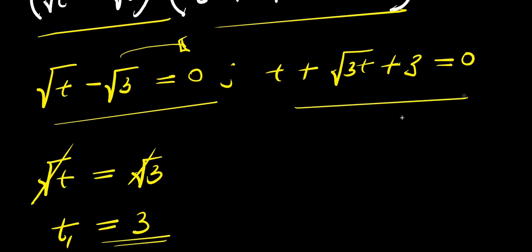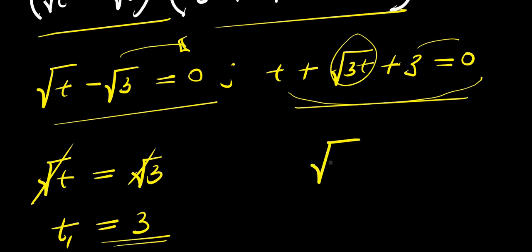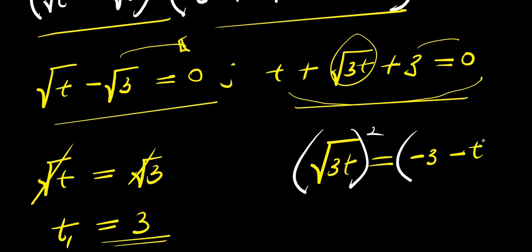Now let's consider the second factor to solve for the other values of t. What I can do is move terms over and isolate the square root of three t. So I have square root of three t equal to negative three minus t. To eliminate the square root, I take the square of both sides of this equation.